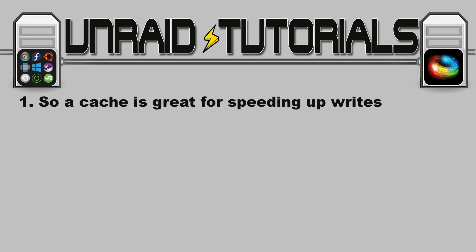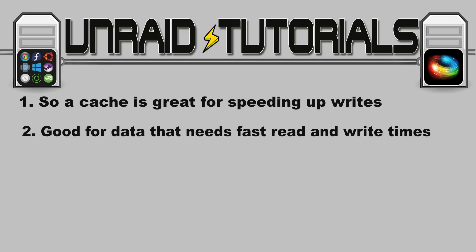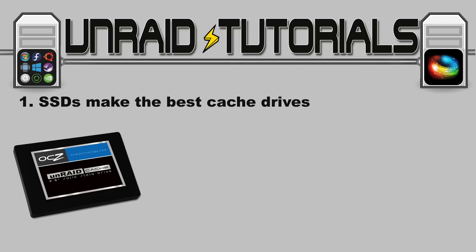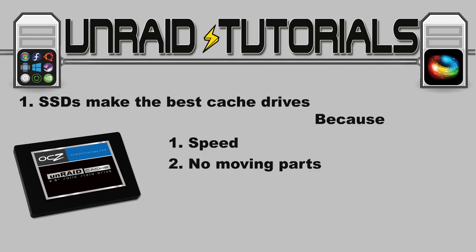A cache drive is good for fast writes to the array, but it can also store data where you want the fastest read and write speeds — such as VM images or docker containers — giving far better performance. The best drives for cache are SSDs, not only for their speed but also because they have no moving parts and consume far less energy than mechanical drives, making them ideal candidates for a drive that's going to have heavy use.